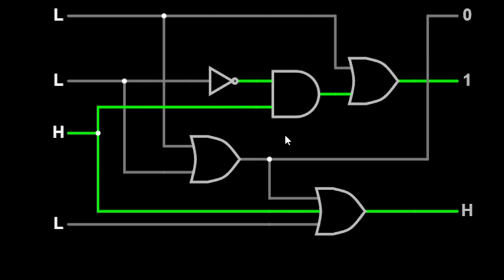Let's take a look at the simulation to understand how a priority encoder functions in a practical scenario. Here we have multiple inputs, and observe how the encoder processes these inputs to give us the encoded output.